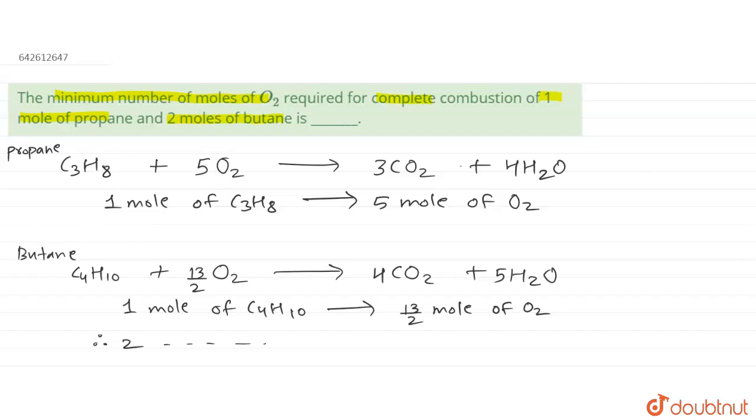For two moles of C4H10, we will require 13 by 2 times 2 moles of O2, so it will come out to be 13 moles, 13 moles of O2.